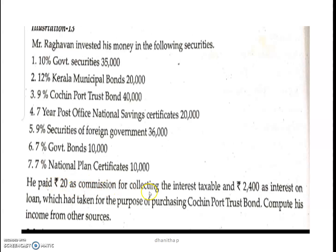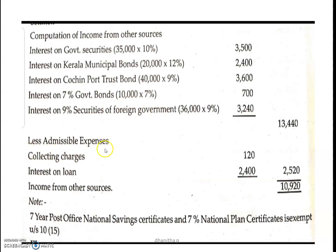He paid 20 as commission for collecting interest, and 2,400 as interest on a loan taken for the purpose of purchasing trust bonds. If securities are purchased and collection charges or commission charges are paid, the assessee can deduct those expenses. So admissible expenses — collection charge and interest on loan — that the assessee can deduct is 2,520. Two invested securities are fully exempted: the 7-year post office national savings certificate and the 7% national plan certificate.